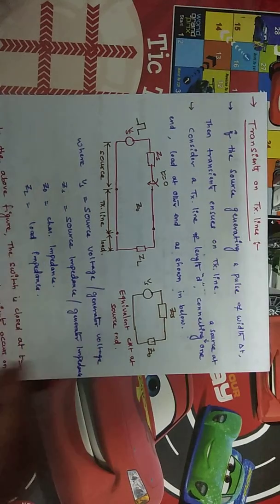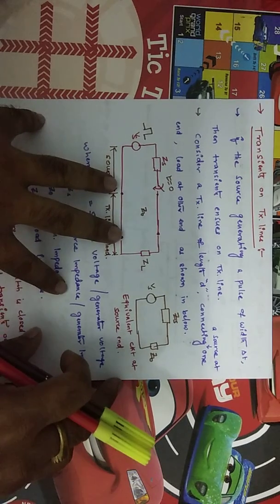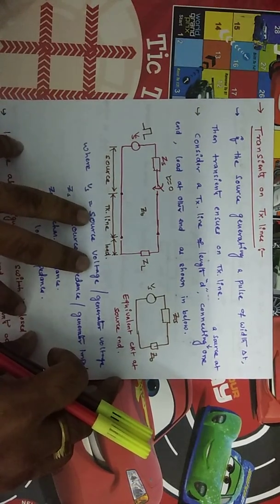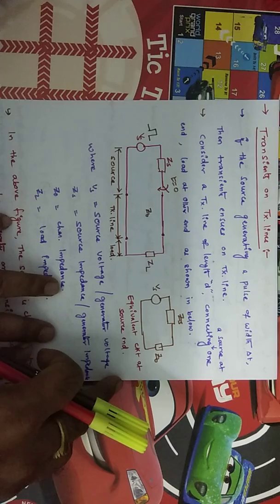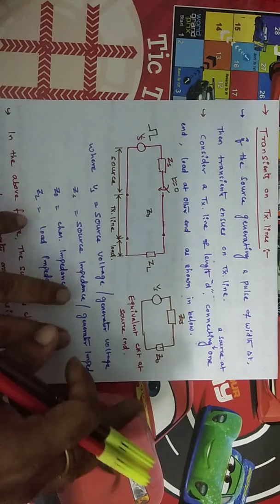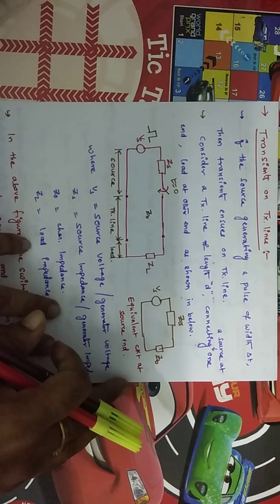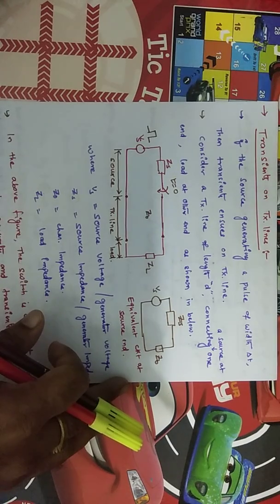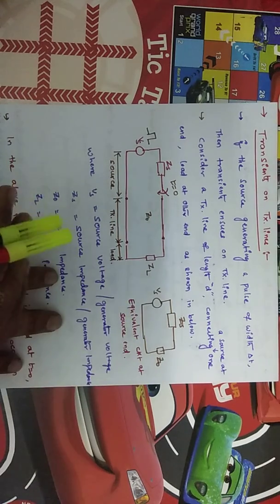In this video we will explain what transients are and what transmission lines are. Generally, whatever we discuss in transmission lines, we talk about the steady state case — that means as the wave is propagating from source to load, there won't be any change when the time changes. Now the concept of transient is based on this.